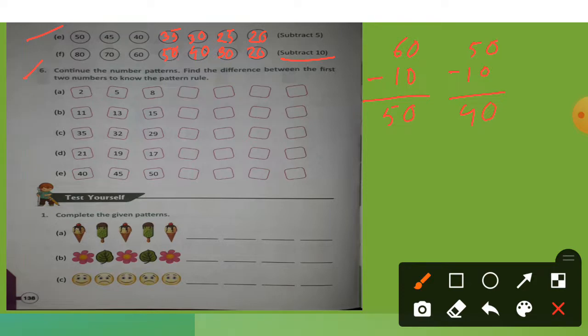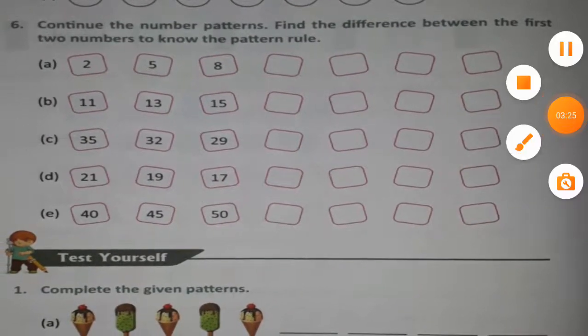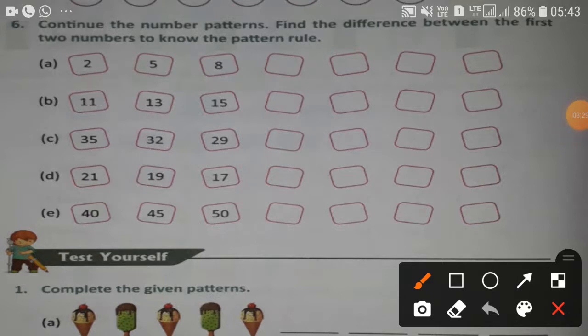Again you subtract, so 50 minus 10 is 40. 40 minus 10, right here 30. 30 minus 10 is 20. Next, number 6, continue the number patterns. Find the difference between the first two numbers to know the pattern rule. First two numbers, the difference between the first two numbers to know the pattern rule.